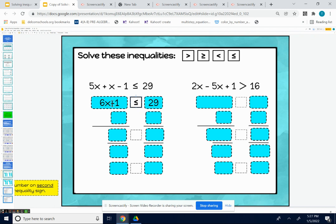Now we want to get rid of the added or subtracted number next. 1 is being subtracted. To get rid of it, we would add 1 to both sides. The negative 1 and the added 1 go away. We're left with 6x on the left and 30 on the right.